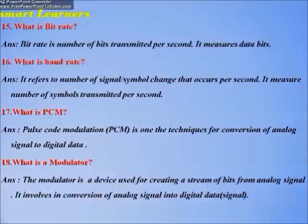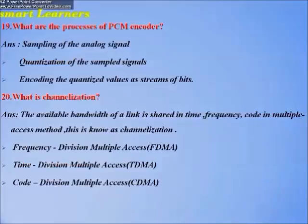The modulator involves the conversion of analog signals into digital data or digital signals. What are the processes of a PCM encoder? The different processes include: sampling of the analog signals, quantization of the sampled signals, and encoding the quantized values as a stream of bits.